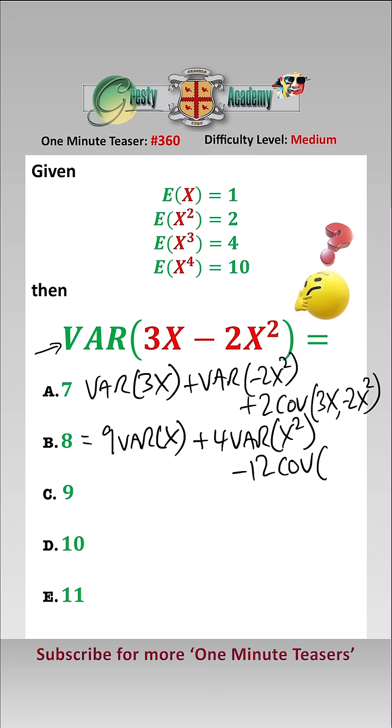times the covariance of X and X². Now var(X) is equal to E(X²) minus E(X) squared, which from these numbers here is equal to 1.